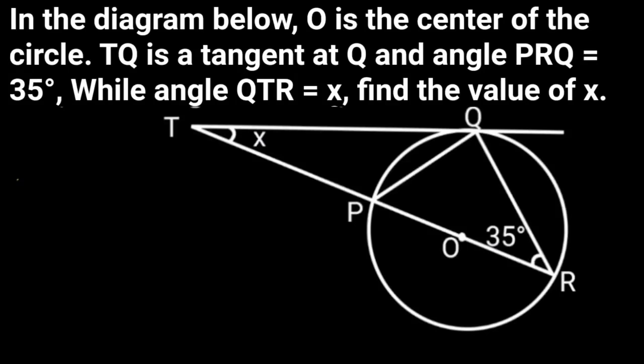In the diagram below, O is the center of the circle. TQ is a tangent at Q, and angle PRQ equals 35 degrees, while angle QTR equals X. Find the value of X.